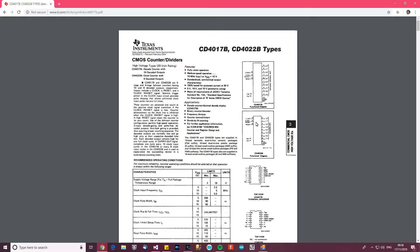So, let's have a look at the CD4017B and find out what it is. So it says here, CMOS counter divider. It says ten decoded outputs. So what does it say here? These counters are advanced one count as a positive clock signal transition if the clock inhibit signal is low. A high reset signal clears the counter to its zero count.